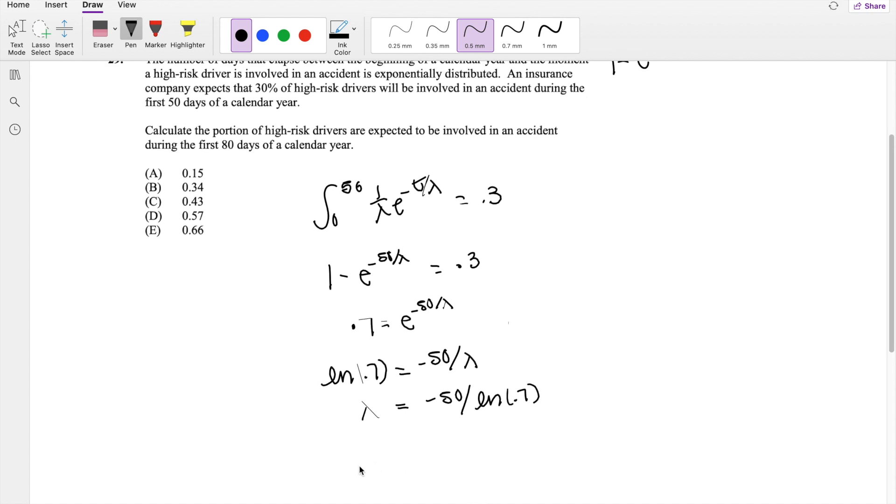And the probability they ask you to find is, what is the probability that in the first 80 days that a high-risk driver is going to get in an accident? (1/λ)e^(-t/λ). Same thing here.